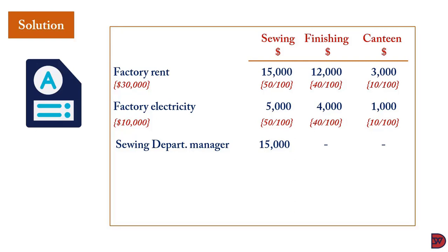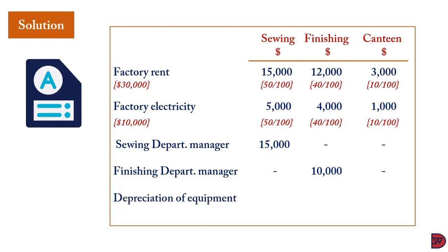For the sewing department manager's salary, it is directly attributed to the sewing department — $15,000 — with nothing for finishing or canteen, since it did not arise from them. Similarly, the finishing department manager's salary goes entirely to the finishing department, with zero for sewing and canteen.